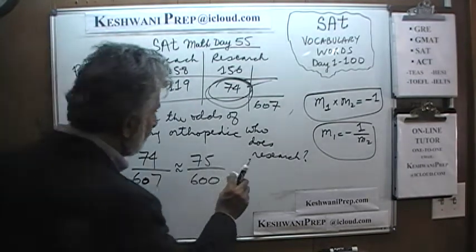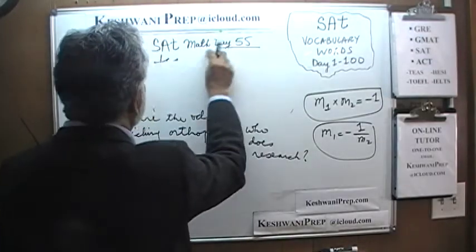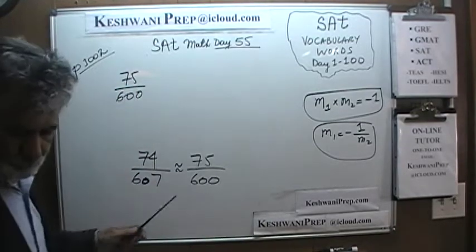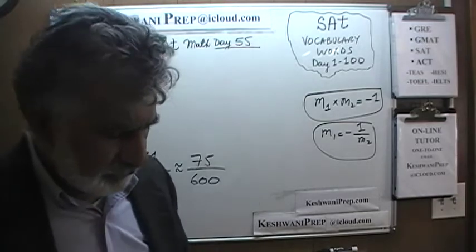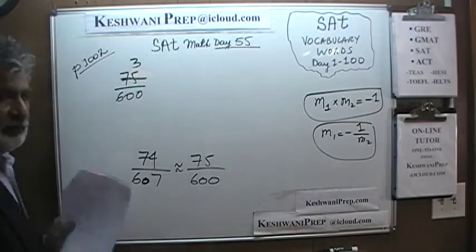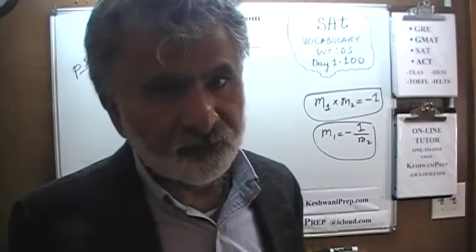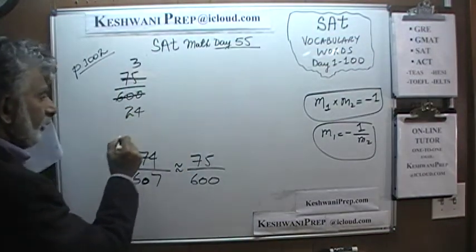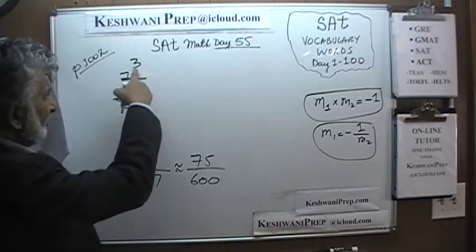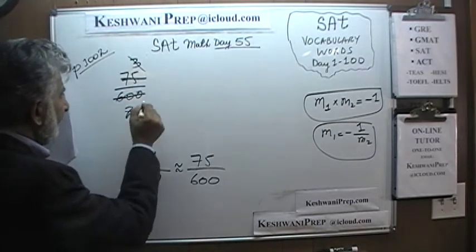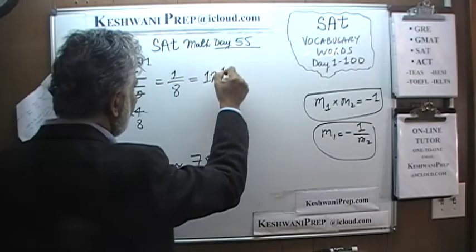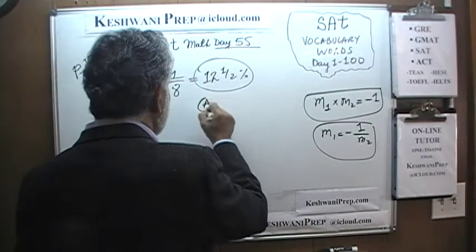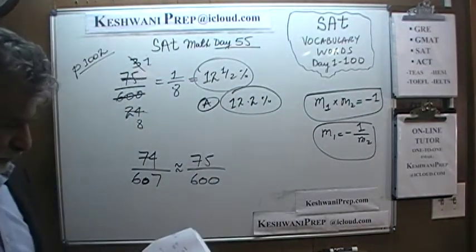We can get away with approximating because this is an SAT — there are four answer choices and they are far enough apart. So 75 over 600: divide top and bottom by 25, we get 3 over 24. Divide top and bottom by 3, we get 1/8. And 1/8 is 12.5%, which means the correct answer has to be close to 12.5% — that's answer choice A, which shows 12.2%. The answer is A.